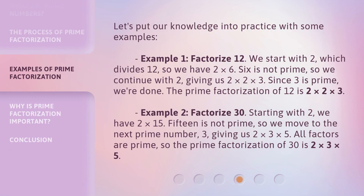Let's put our knowledge into practice with some examples. Example 1: Factorize 12. We start with 2, which divides 12, so we have 2 times 6. 6 is not prime, so we continue with 2, giving us 2 times 2 times 3. Since 3 is prime, we're done. The prime factorization of 12 is 2 times 2 times 3.